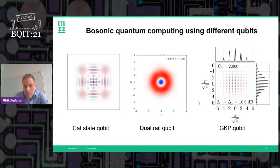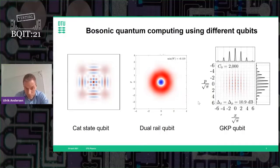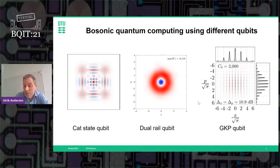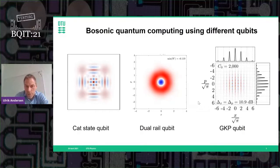There are of course advantages and disadvantages of all these approaches. The dual-rail qubit is probably the one studied the most because it's relatively easy today to generate single photons. The phase-space picture of the Wigner function shown on the slide is from experimentally generated data from our lab — this is a state we can relatively easily generate. However, the disadvantage is that it's significantly difficult to generate entangling gates or fusing gates, which are often done non-deterministically, leading to large overhead.